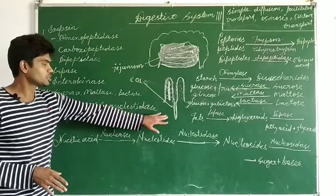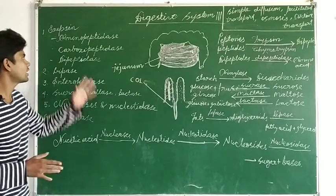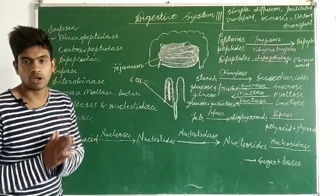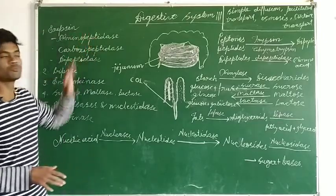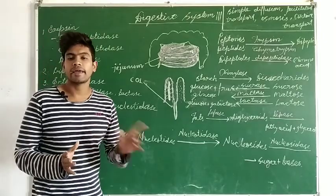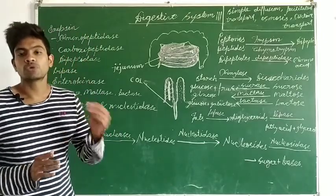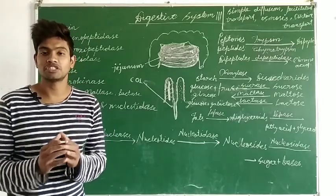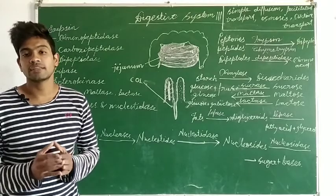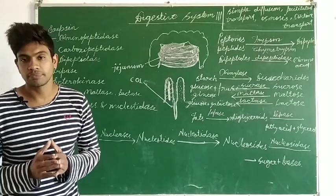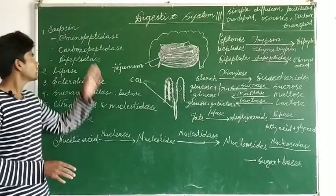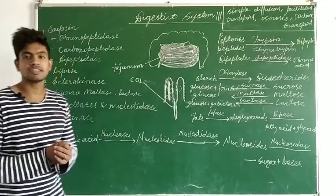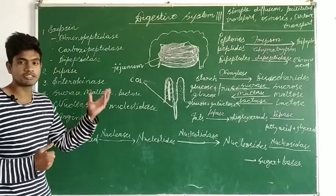In the intestinal juices, the first component is erepsin. Erepsin is a group of proteolytic enzymes. Proteolytic enzymes are those enzymes which act on complex structures of protein and break them into simpler proteins. There are three enzymes which come under this group.